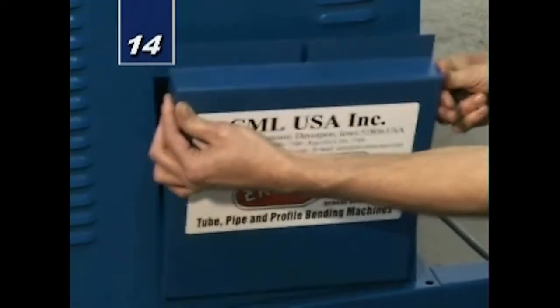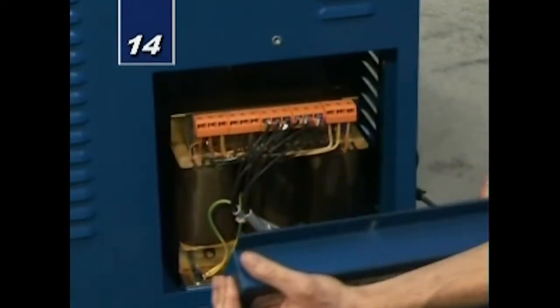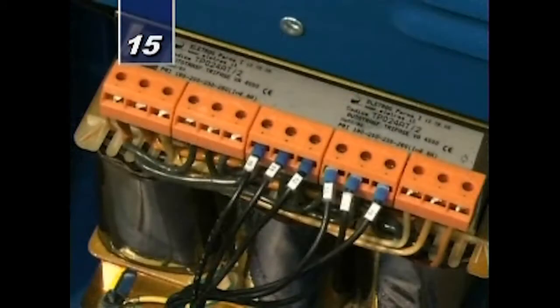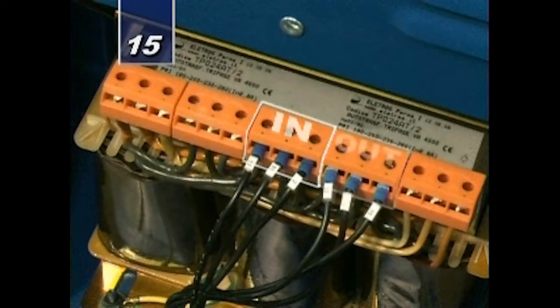Remove access cover on bending machine exposing power supply transformer. Identify two power cables. One cable is tagged in for incoming power and the other is marked out for outgoing power.